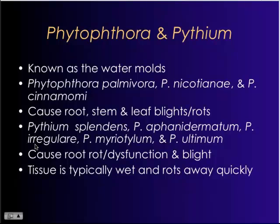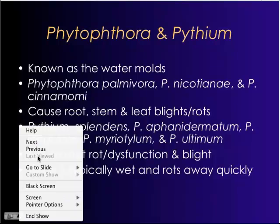The root dysfunction caused by these pathogens is huge because it impairs the plant's ability to take up nutrients. You get severe chlorosis as a result, and this is a big problem especially for longer-grown crops because it takes a long time to turn around and bring back the plant quality you need to sell.